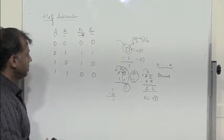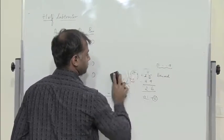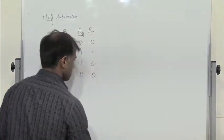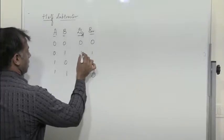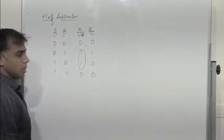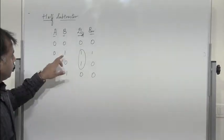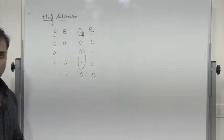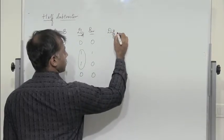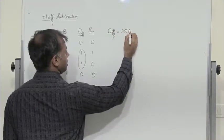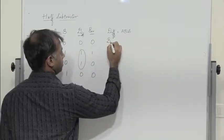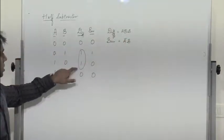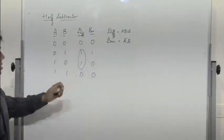Once we write the truth table, we can write the algebraic expression for both difference and borrow. Observing the truth table, the difference is 1 for inputs 0-1 and 1-0, which is the condition for XOR. So difference is A XOR B. Whereas borrow is A-bar dot B — that is, A̅B. So borrow is A̅B and difference is A XOR B.